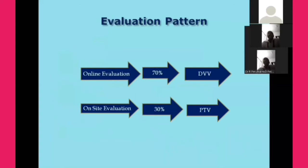The evaluation pattern of NAAC is divided into online evaluation and on-site evaluation. During the online evaluation, 70% of the assessment is completed by the Data Validation and Verification Committee without visiting the institution — they scrutinize all documents submitted with the SSR. After the 70% evaluation is complete, a peer team visit is executed, and the remaining 30% evaluation is done by the peer team committee. Combining the peer team evaluation and DVV evaluation, we obtain accreditation.